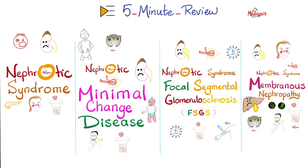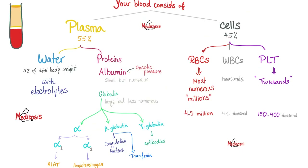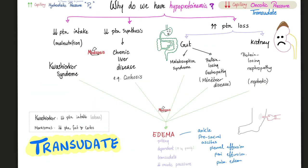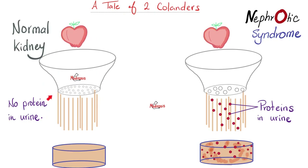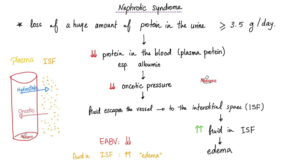Today's video is going to be super fast because we have discussed most of these concepts before. Your blood is made of plasma and cells. Plasma has proteins such as albumin and globulin. Why do we get hypoproteinemia? Maybe because we're not eating protein, maybe we're not making protein, or maybe we're losing protein in the stool or in the urine. When you lose it in the urine, it's called nephrotic syndrome. A good kidney is like a good colander — it does not let the protein through. A bad kidney with nephrotic syndrome is like a screwed colander; it lets the protein through. When I lose my protein in the urine, I lose my oncotic pressure and I get edema.